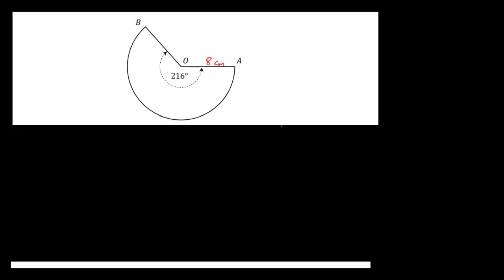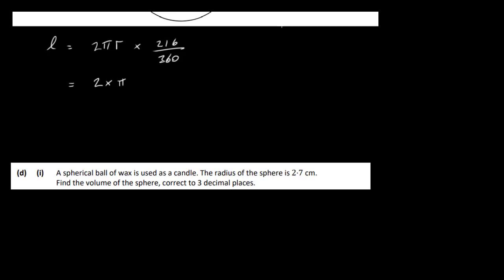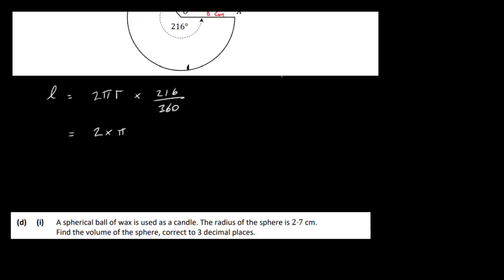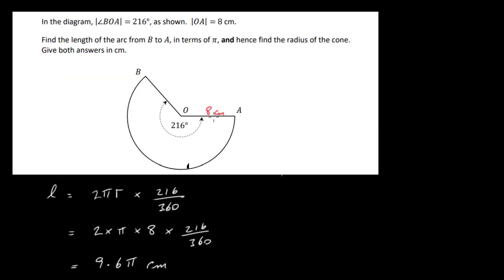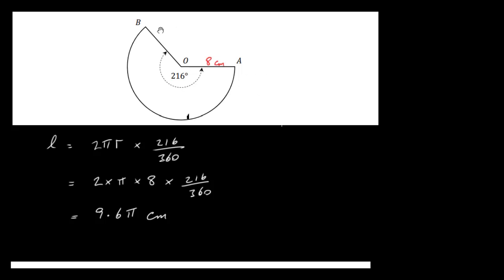The formula for the arc length of a sector is: if it were a full circle it would be 2πr, but we only have a fraction of the circle — specifically 216/360 of it. So the arc length = (216/360) × 2π × 8 = 9.6π cm.